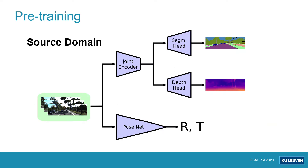We chose to employ self-supervised structure from motion as a proxy task for our domain adaptation framework. First, we pre-train the model in the source domain, with depth and semantics networks sharing an encoder.